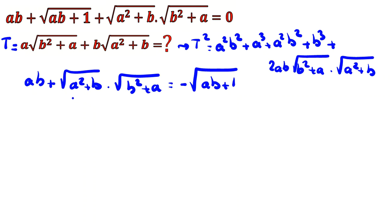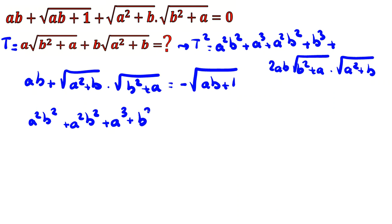If I raise both sides to the power of two, I get: a²b² + a³ + b³ + ab = (ab + 1)², which expands as the square of each term plus 2ab · (a² + b)(b² + a). This equals (−ab − 1)², so the negative becomes positive.